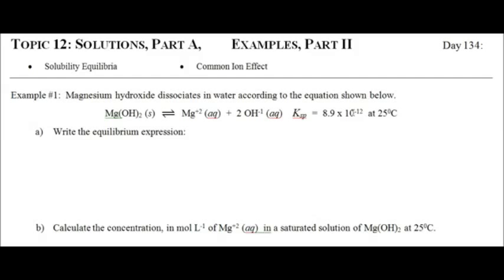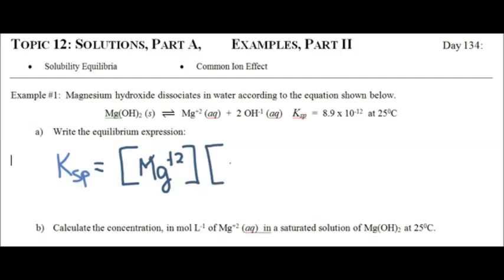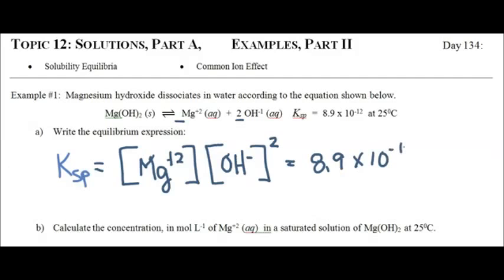Let's look at example number one. It says magnesium hydroxide dissociates in water according to the equation shown. Write the equilibrium expression — products over reactants. So KSP equals [Mg²⁺][OH⁻]², since hydroxide has a coefficient of 2 so we square it, and magnesium has a coefficient of 1. That equals 8.9 × 10⁻¹². Magnesium hydroxide is very insoluble — that's a very low KSP value.